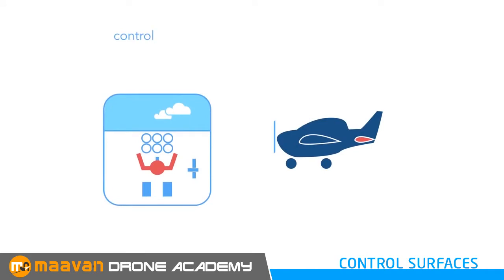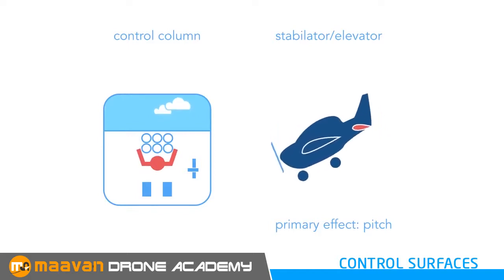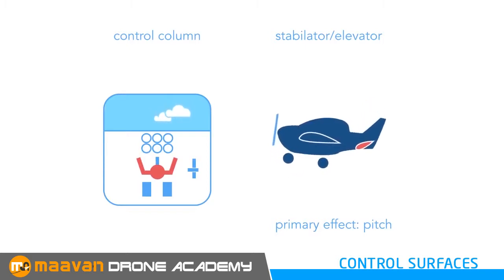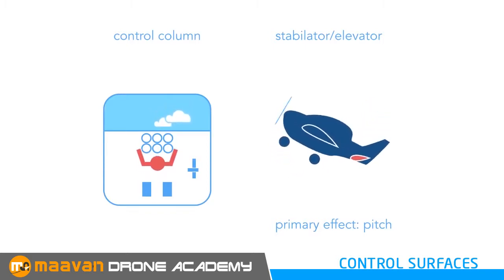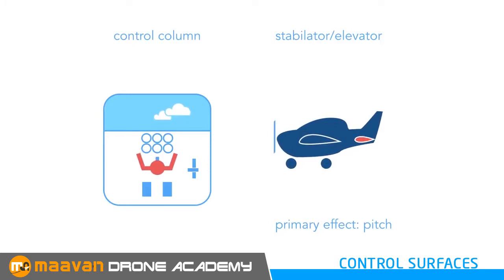The aircraft model in this demonstration is fitted with a stabilator, which is a one piece design of an elevator. The pilot uses the control column to operate this control surface by pushing it forward or pulling it back. As the stabilator moves up or down, it deflects the relative airflow and causes the aircraft to pitch up or down about its centre of gravity.